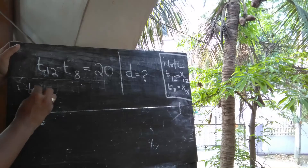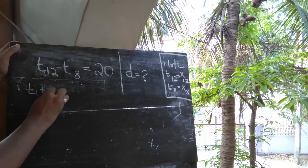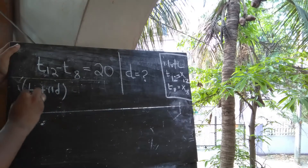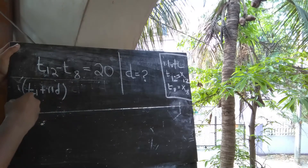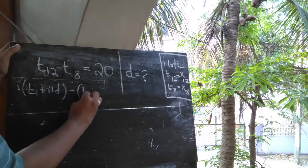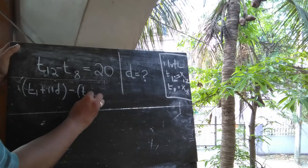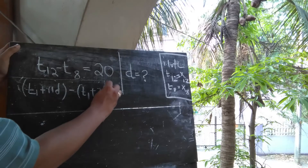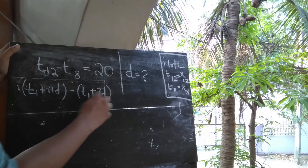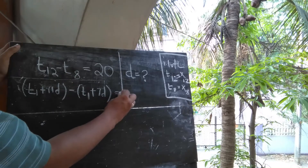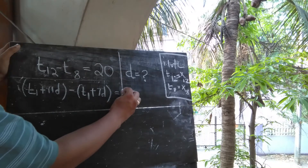This is the first time plus 11 difference. This is the number of 10. This is minus first time plus 7 difference. This is the number of 1. This is what we have to do with e.